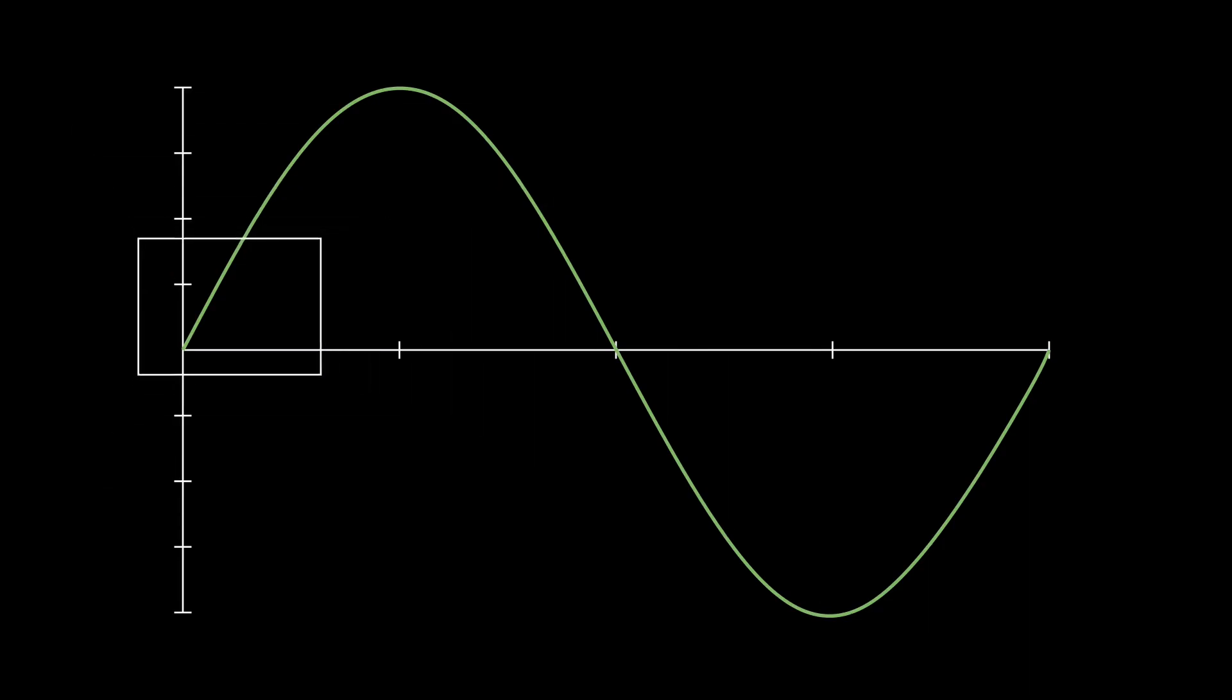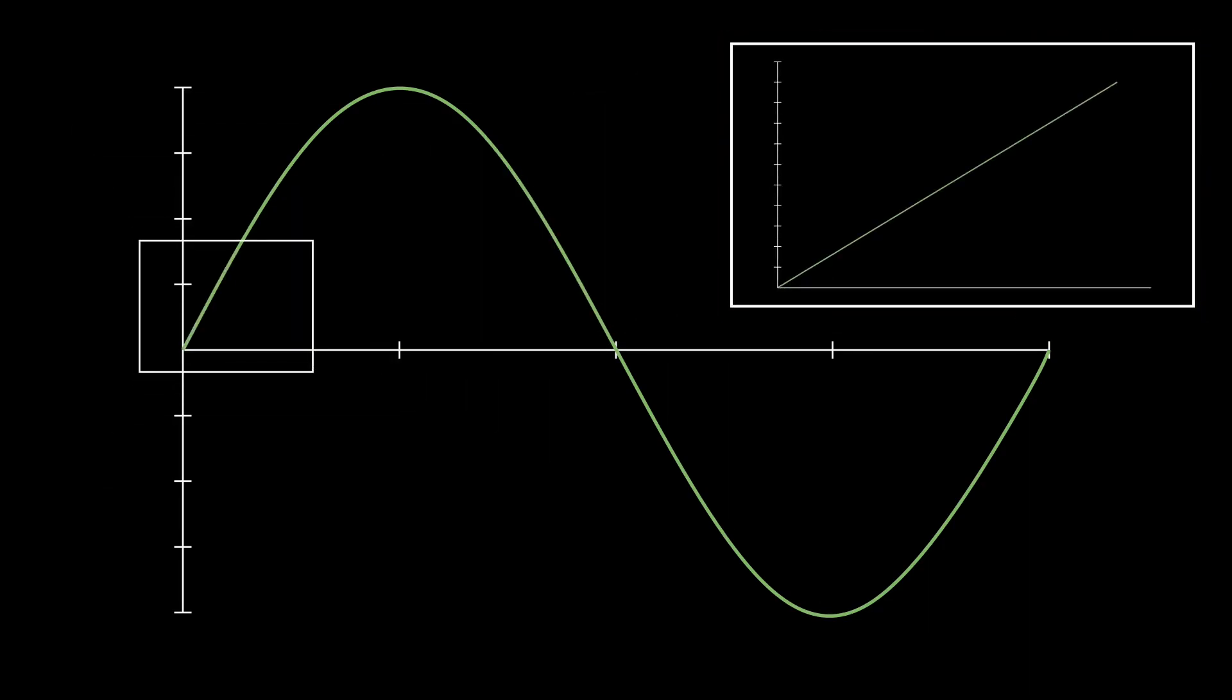Now let's zoom in to see how the floor function affects the curve. Sine is a continuous function, but the floor function changes that. Instead of being a smooth curve, we have a series of horizontal sections looking kind of like a staircase. Our goal then is to find the area under this staircase.